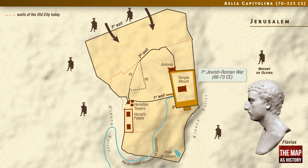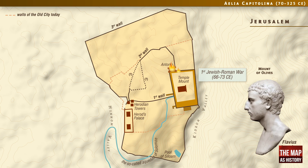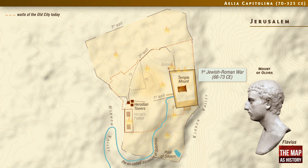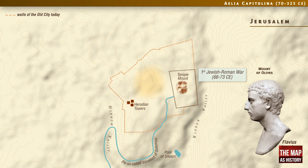On 24 July 70 CE, the fortress of Antonia fell. On 10 August, the Romans destroyed the northwest porticos linking the fortress to the temple. On 30 August, the sanctuary was burned down and the whole city was razed to the ground. The walls were also destroyed, with the exception of the three towers constructed by Herod.